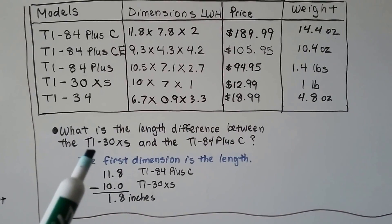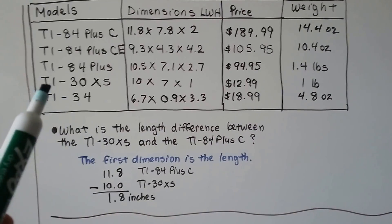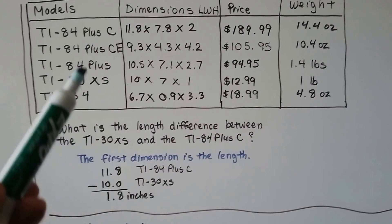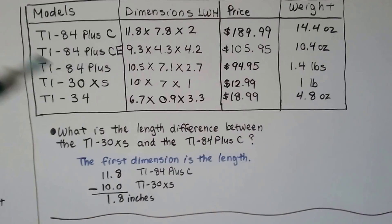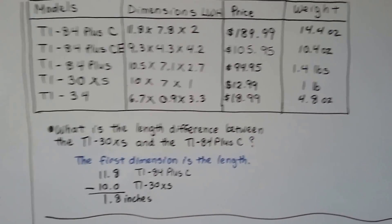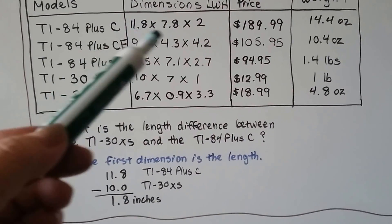It wants to know the length difference between the TI-30XS, that's this one, and the TI-84 plus C. Now this one's the plus CE, so you've got to be careful. So the length is the first measure. This is length, width, and height.